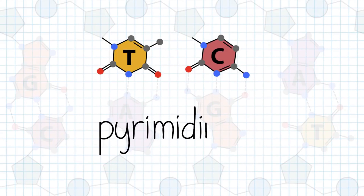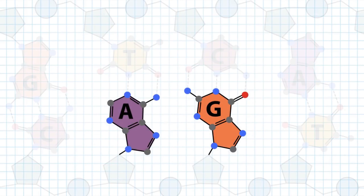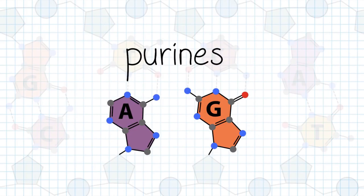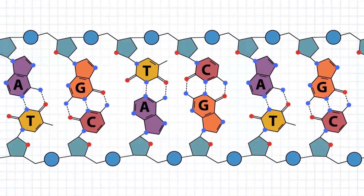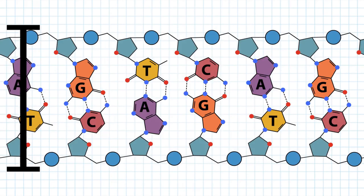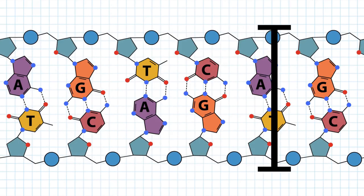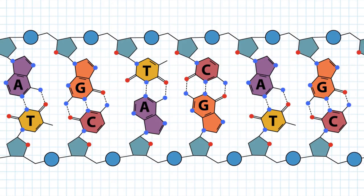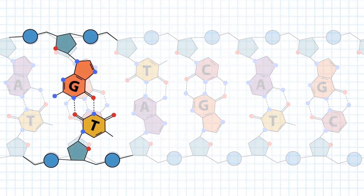Thymine and cytosine are called pyrimidines, characterized by their single ring structure, and adenine and guanine are called purines, which have double rings. The geometry of the AT or TA and GC or CG base pairs is the same, allowing for symmetry and base stacking in the helix. This mostly has to do with the distance between the backbones and the angles to which the base is attached to the backbone. Other base pairs, like GT for example, do not have the same geometry, cannot form strong hydrogen bonds, and disturb the helix.